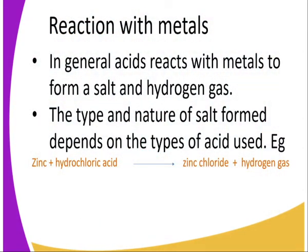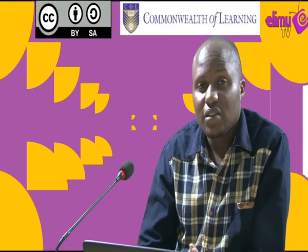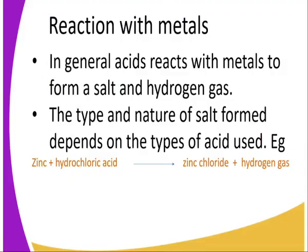In general, we can summarize with the following key points. The reaction between acids and metals gives us salt and hydrogen gas, and the salt formed depends on the acid used. If we use hydrochloric acid, we get a chloride salt. If we use sulfuric acid, we get a sulfate salt. If we use nitric acid, we get a nitrate salt. The salts formed have different properties.